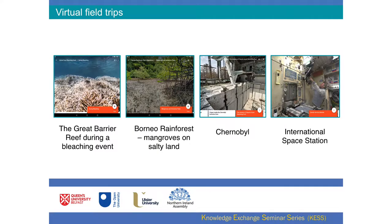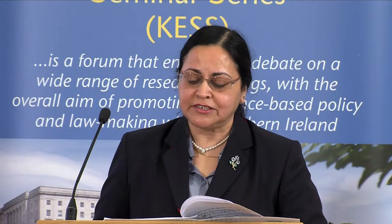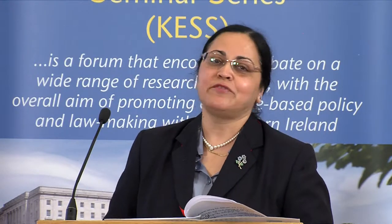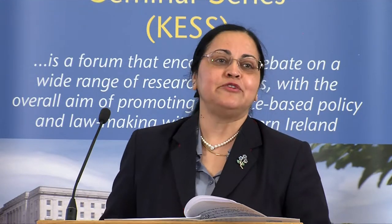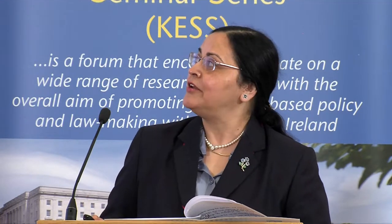These virtual field trips include places that may be impossible to visit in person, like the Great Barrier Reef to see coral bleaching, the Borneo Rainforest, Chernobyl where the nuclear disaster took place, and the International Space Station. This gives a good mix of geography and science field trips representative of what we've been using in our research.